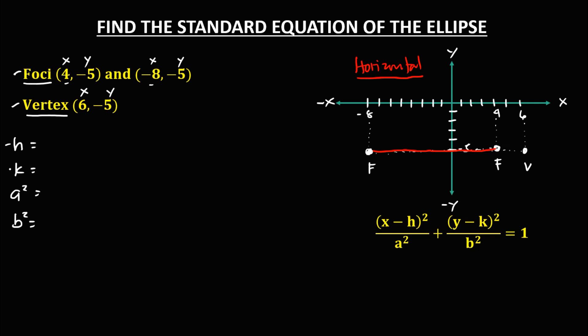To find h and k from the center of the ellipse — since there is no given center — we can find the center from the foci. We use the counting method, starting counting on the next point. From one focus to the other, counting gives us 12, then divide by 2 to find the center, that's 6.